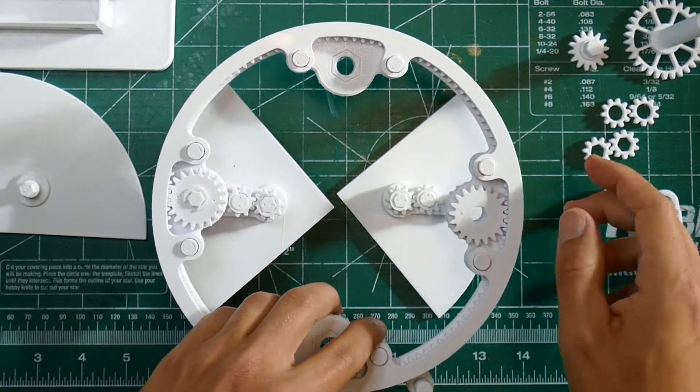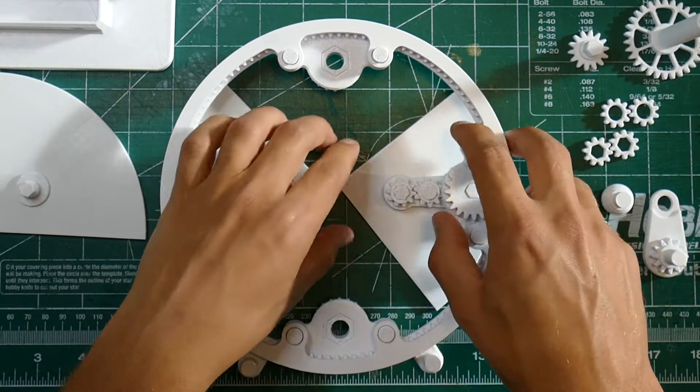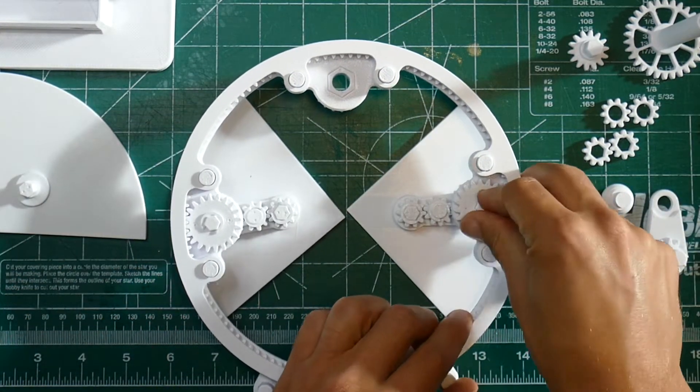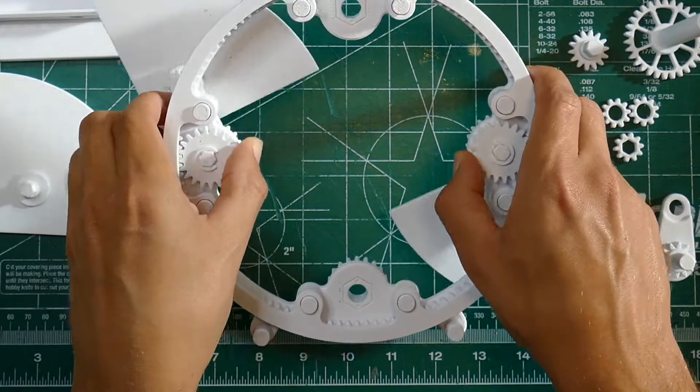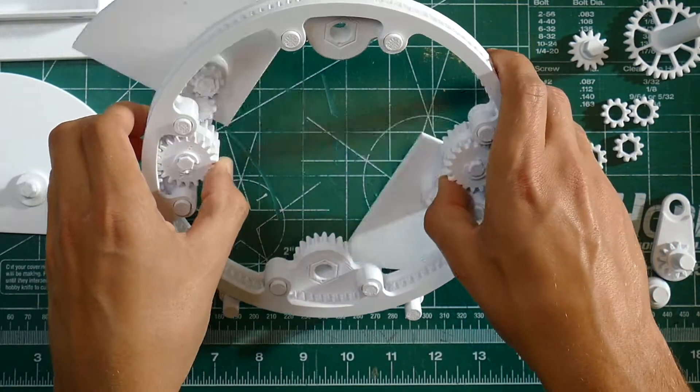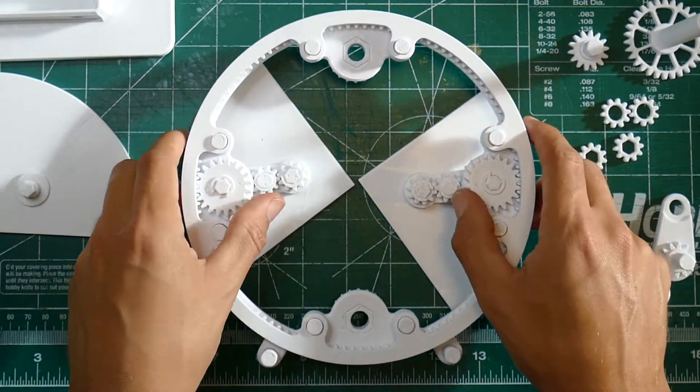On these ones put the gear in first then pop it in and then once you have it all lined up throw a C-clamp in there to hold it into place. Give it a few spins to make sure that it's all working together before you move on to the next segment and then just repeat the steps for the next one.